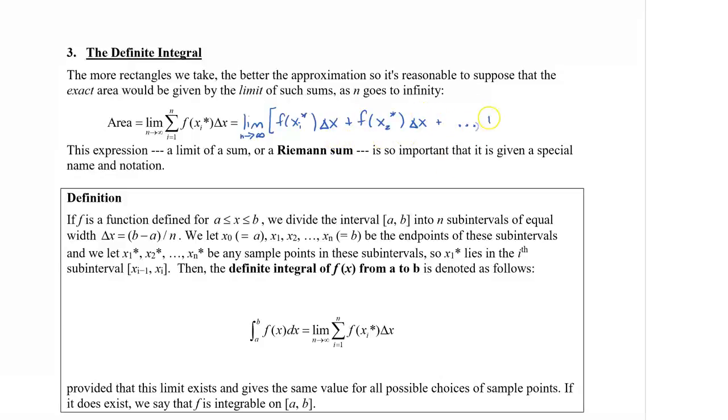Plus dot, dot, dot, plus f of xn star, which is the last rectangle, also with a width, so times delta x. So this expression is called a limit of a sum, or it's actually called a Riemann sum. And it is so important that it is given a special name and notation. And that's what leads us into the integral.